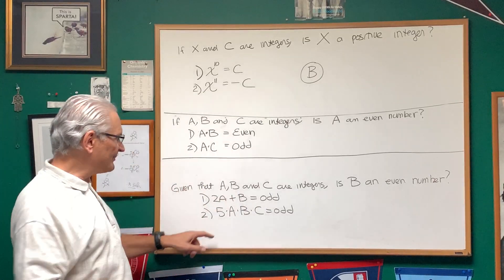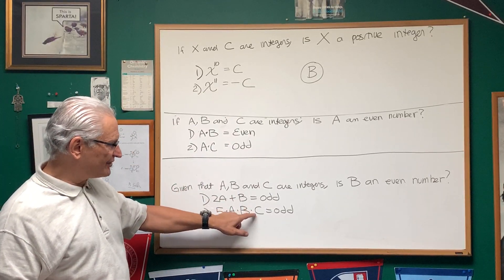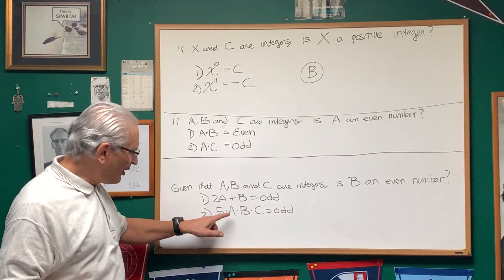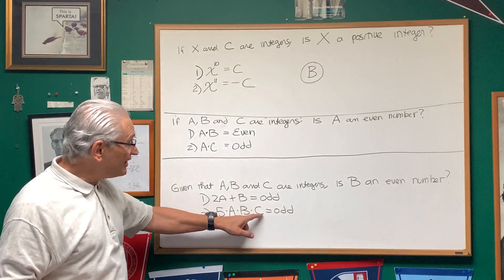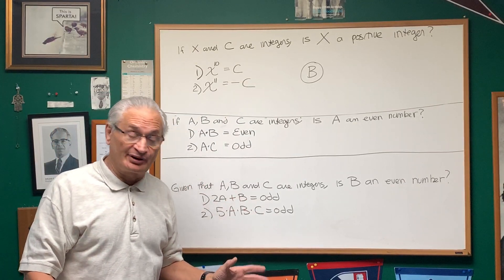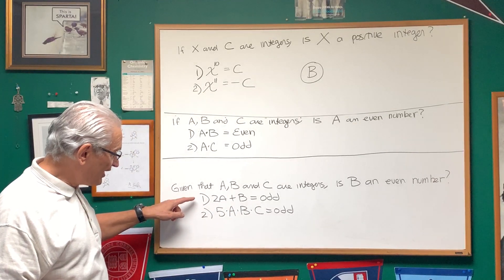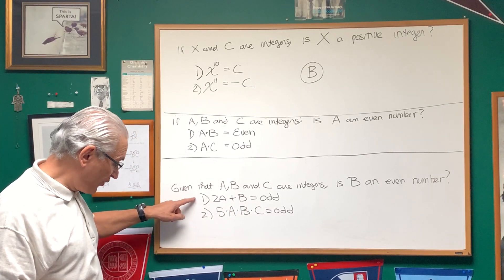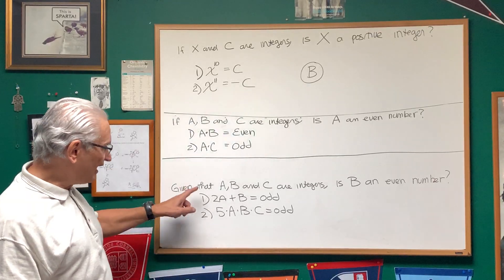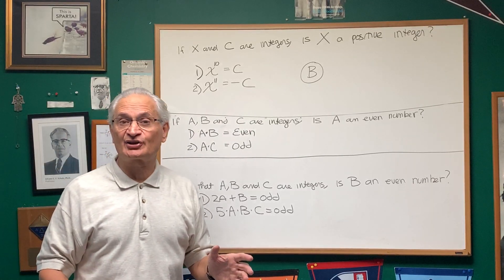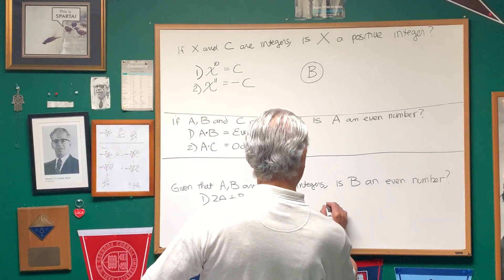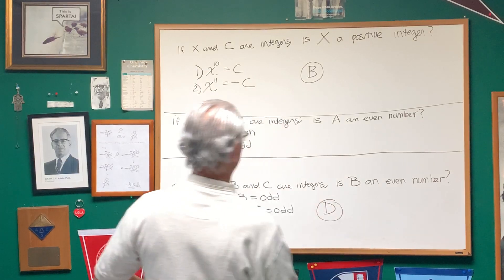Now let's look at statement two. Five times A times B times C is odd. In order for this product to be odd, both A, B, and C, all of A, B, and C, each one of them has to be an odd number. So we can infer the answer from statements one and statement two. So that means the answer is D. Each statement alone is sufficient to answer the question. And that is the answer here. I'm going to put D for this answer. And over here, the answer was B.